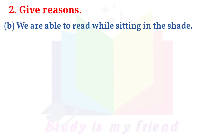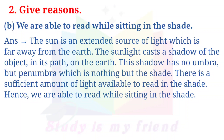B. We are able to read while sitting in the shade. Answer: The sun is an extended source of light which is far away from the earth. Sunlight casts a shadow of the object in its path. This shadow has no umbra but has penumbra, which is the shade. There is a sufficient amount of light available to read in the shade. Hence, we are able to read while sitting in the shade.